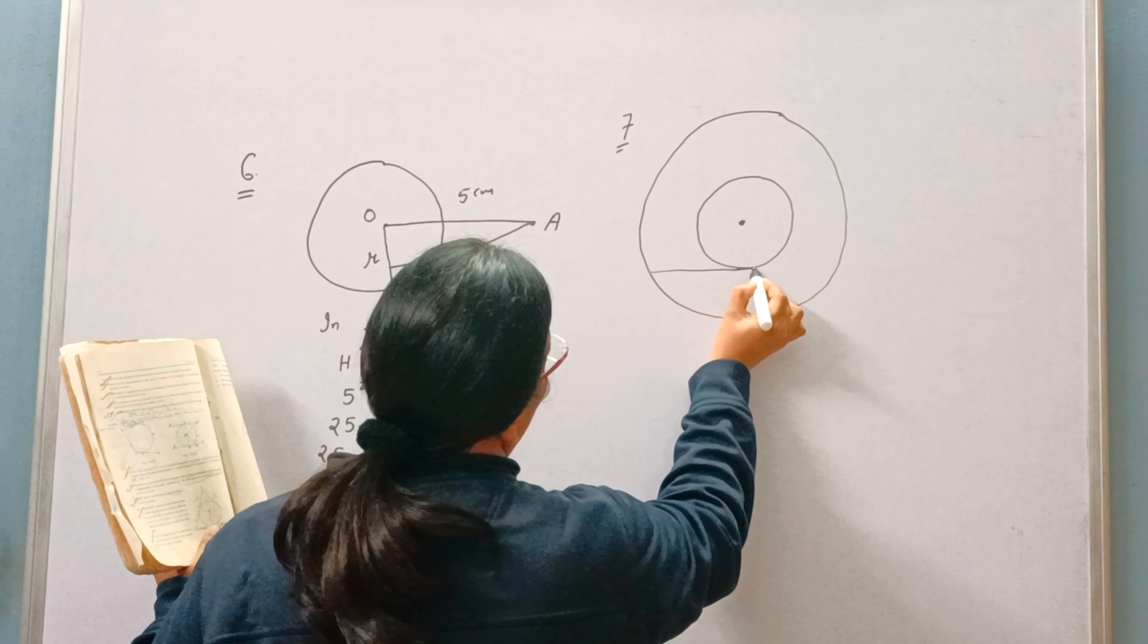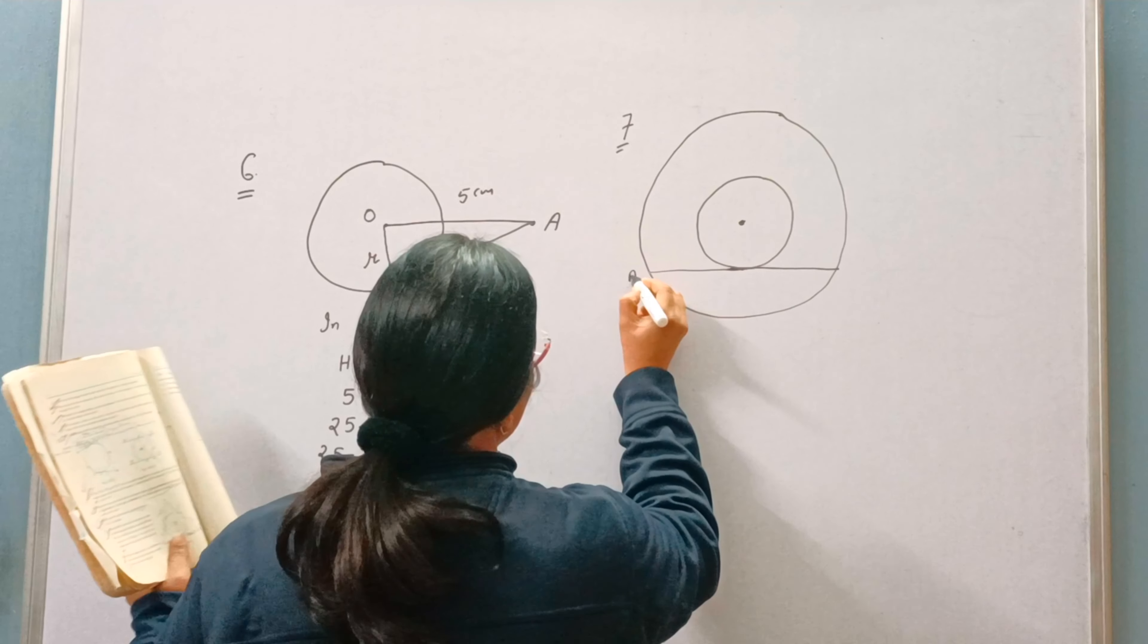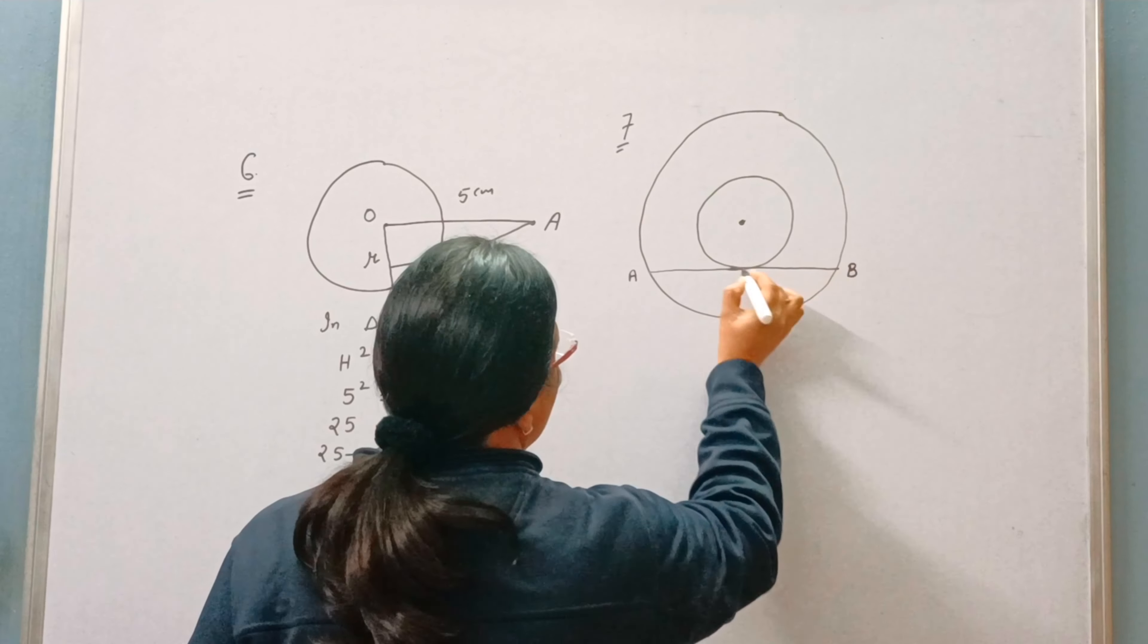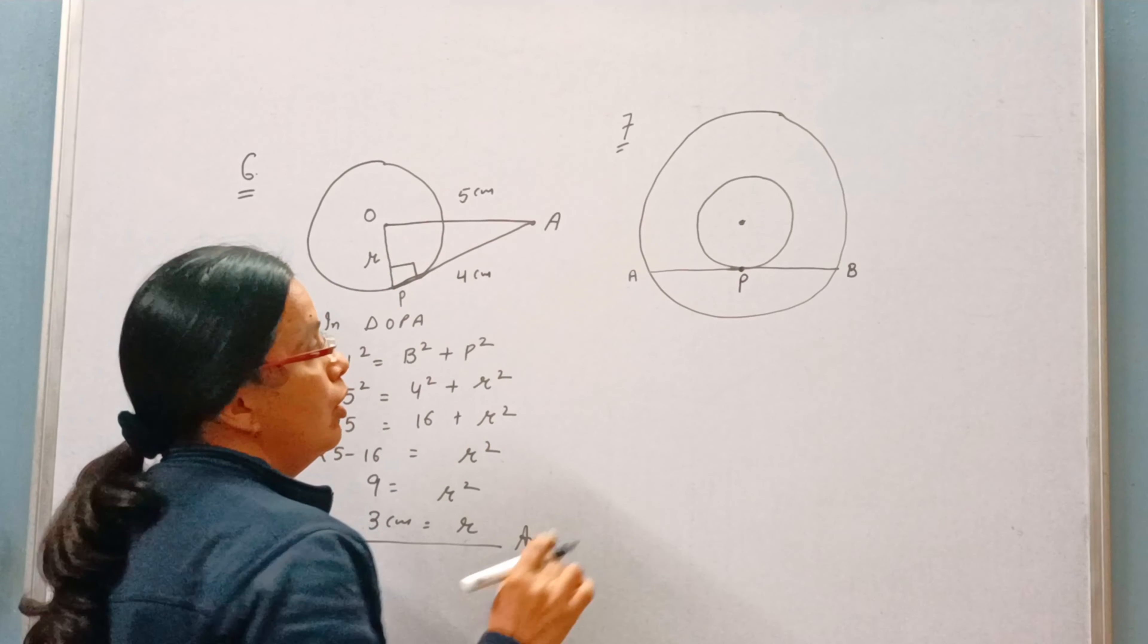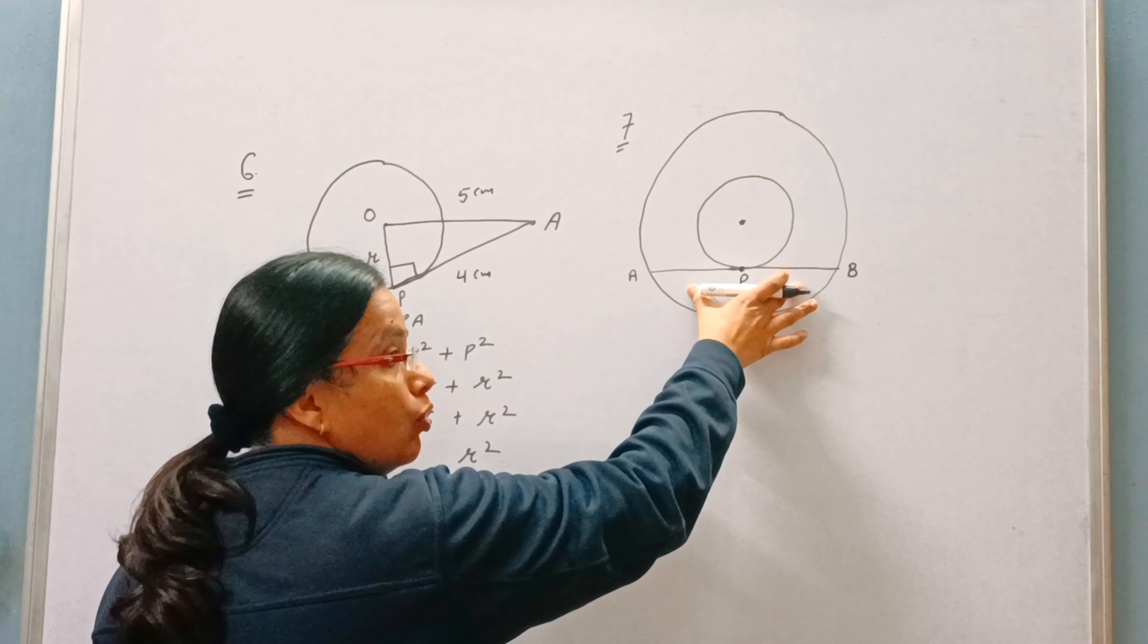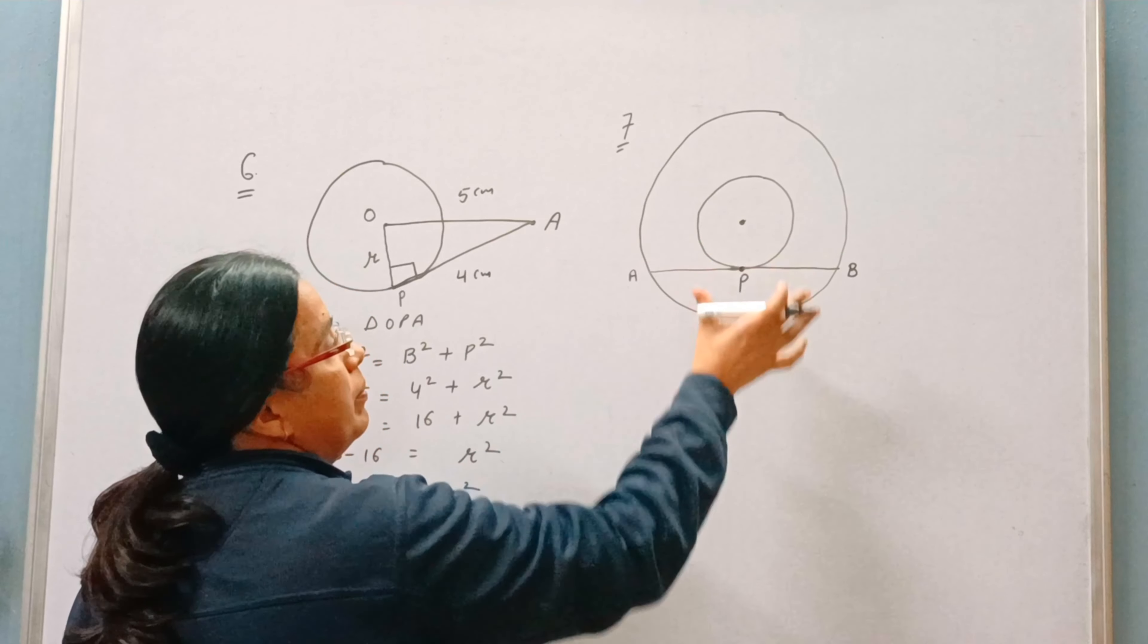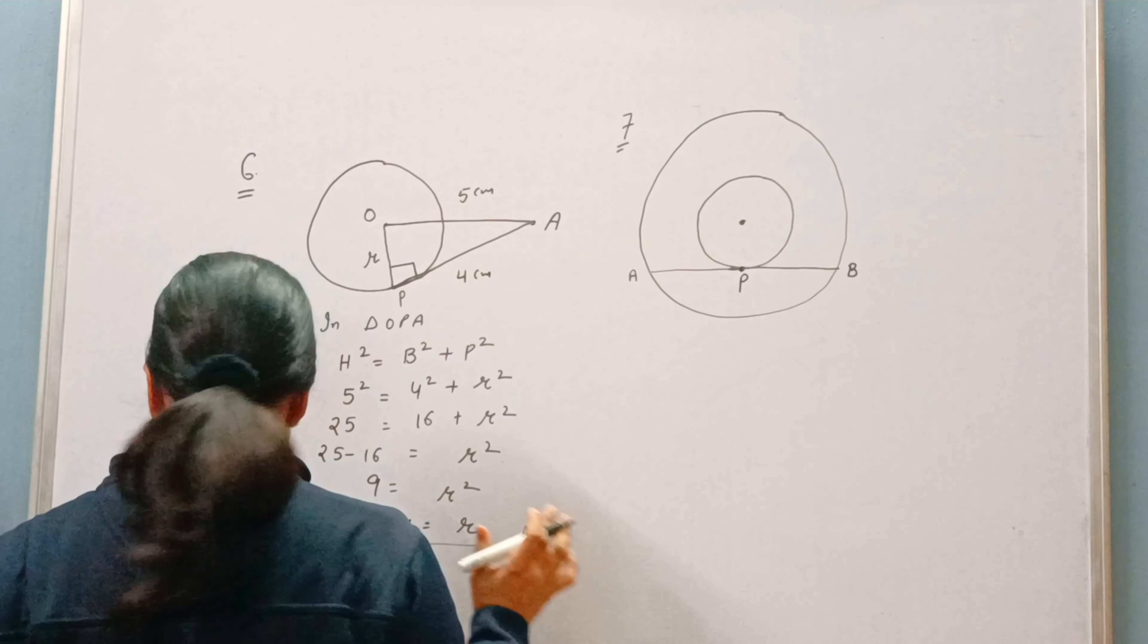Now see, this is the chord of the larger circle. AB is the chord of the larger circle and it touches the smaller circle at P. So for larger circle AB is the chord but for smaller circle AB is the tangent.